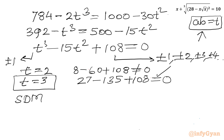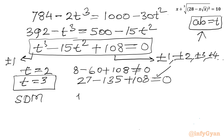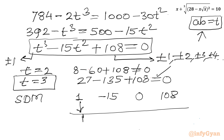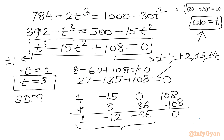Using synthetic division with root t = 3 on the cubic t³ − 15t² + 0t + 108: coefficients are 1, −15, 0, 108. Bringing down 1; 3×1 = 3, giving −12; 3×(−12) = −36, giving −36; 3×(−36) = −108, giving remainder 0. The resulting quadratic factor is t² minus 12t minus 36 equal to 0.